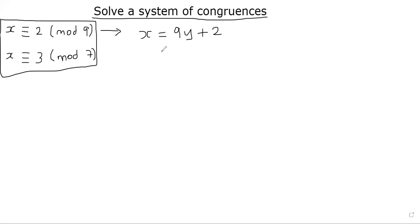So we can now go ahead and substitute that x into the second one. We can now simplify this using basic modular arithmetic concepts. We will get 2y congruent to 1 mod 7.